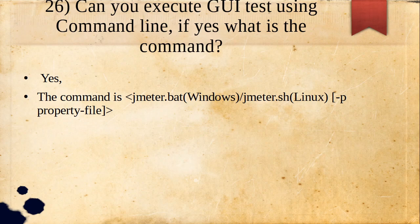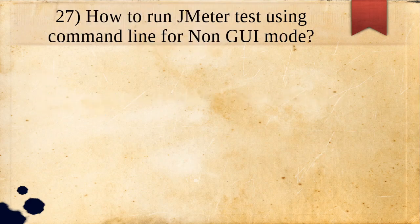The -p flag specifies a property file, which is optional and refers to jmeter.properties. You can use the default jmeter.properties without specifying it, or if you want a custom JMeter property file, use the -p flag followed by the file location.